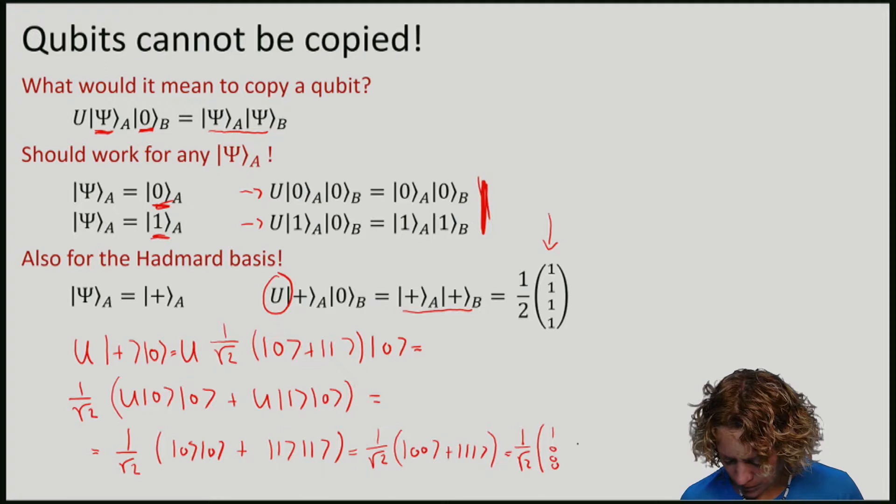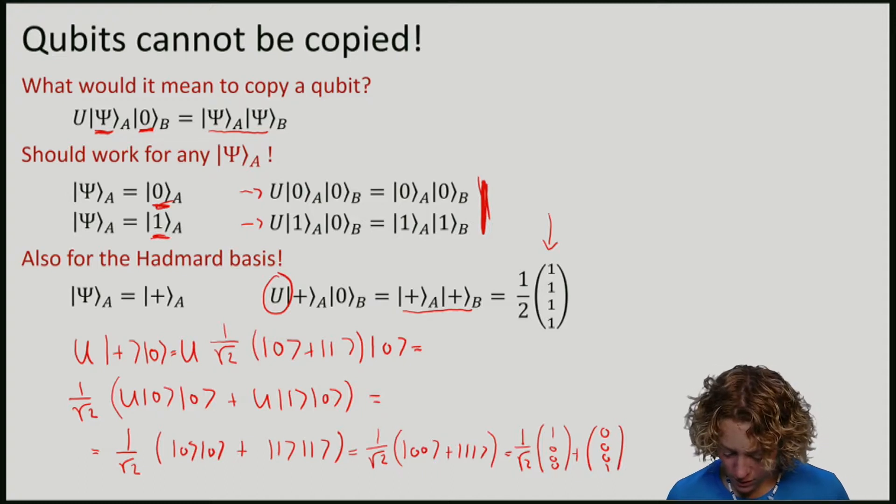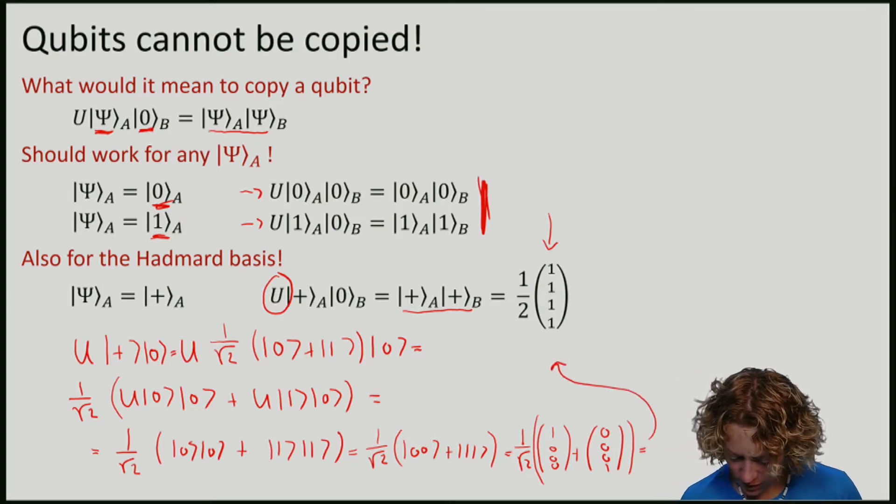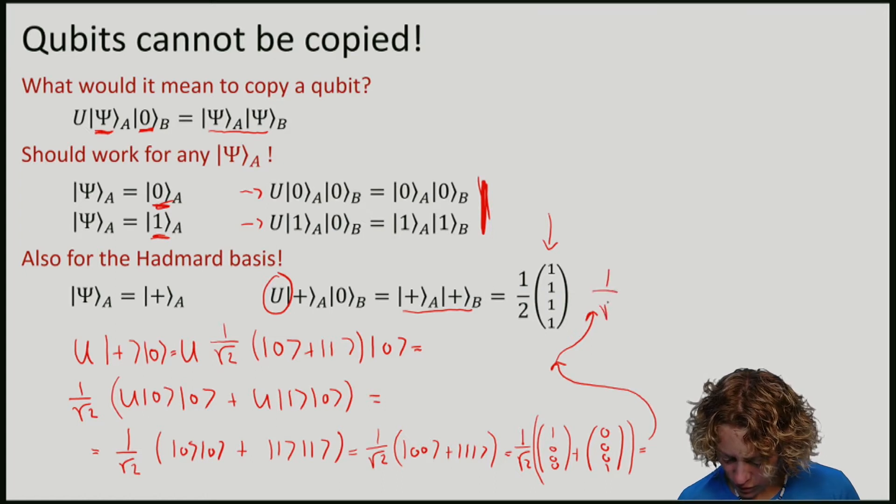Which equals 1/√2(|00⟩ + 0|01⟩ + 0|10⟩ + |11⟩), which gives, and let me write it up here for contrast, 1/√2(|00⟩ + |11⟩). And evidently these two vectors here are not the same.